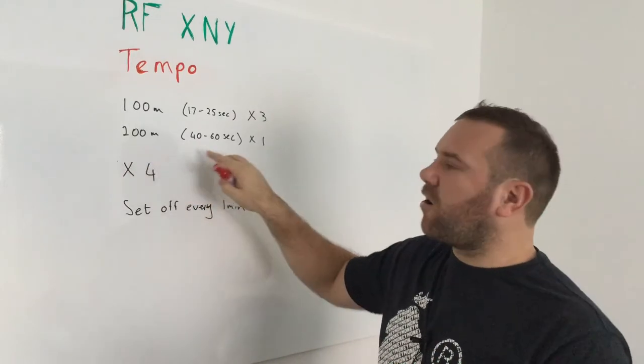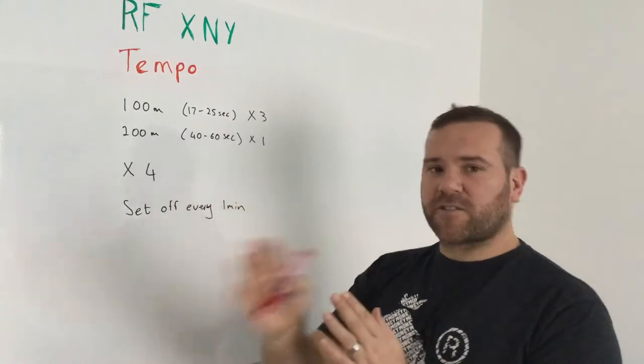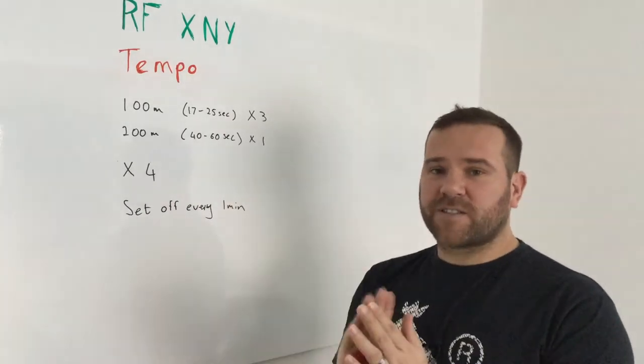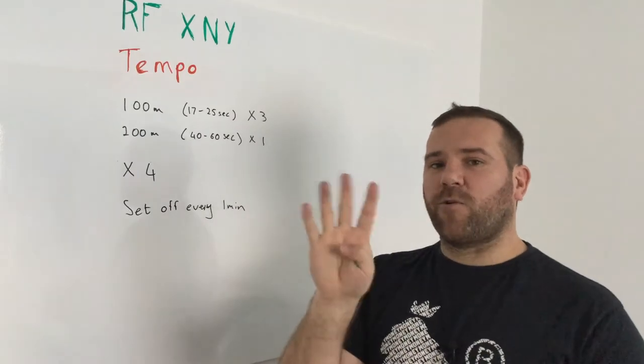So again, it's 100 metre sprints with those targets. You're going to do three 100s, followed by a 200. That's one set, and we're doing four sets total.